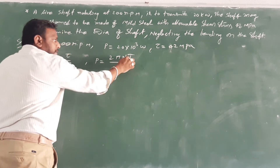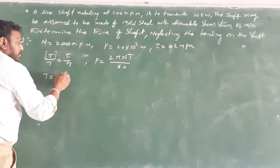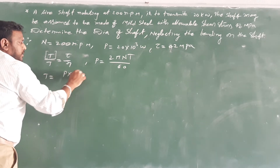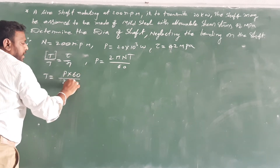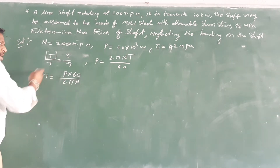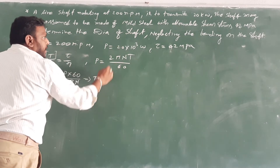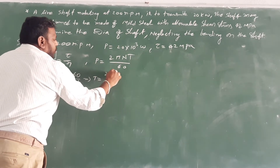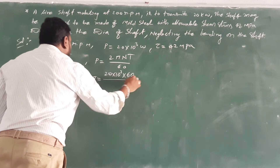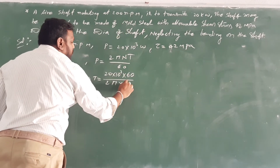If power is P, then torque T is equal to P times 60 divided by 2π N. So T equals — using the values — into 10 to the power of 3, times 60 divided by 2π times 200.